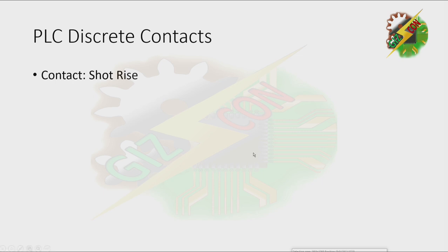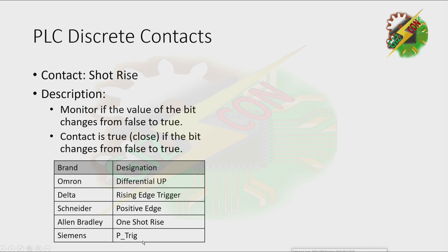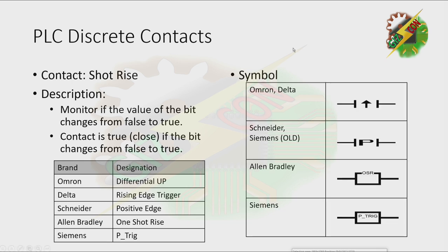Next, we have short rise. It monitors if the value of the bit changes from false to true — the contact is true or closed if the bit changes from false to true. This might be a little confusing, but we will discuss it. By the way, these are the other names for short rise for different brands of PLCs, and these are the symbols for different brands of PLCs.